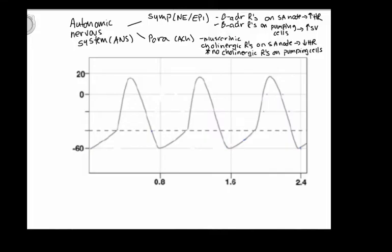The SA node cells have muscarinic cholinergic receptors, and when acetylcholine from parasympathetic neurons binds with those cells, we see a decrease in heart rate. But there is no direct effect of acetylcholine on the pumping cells because they do not have cholinergic receptors.